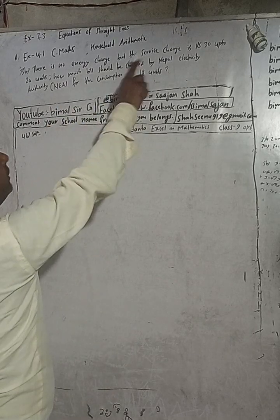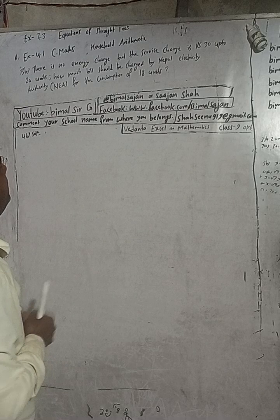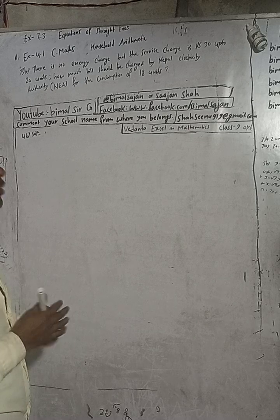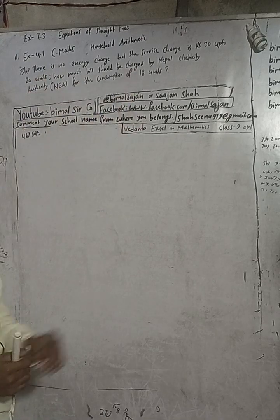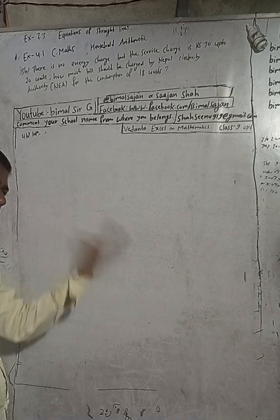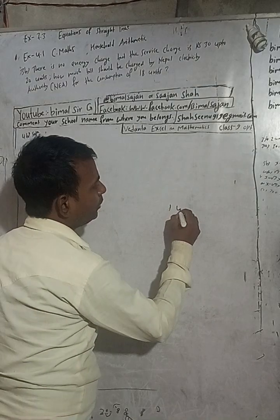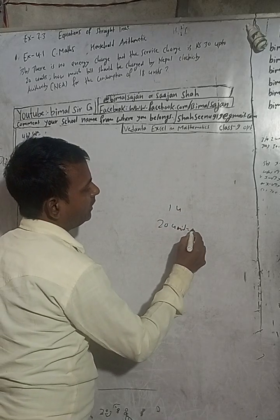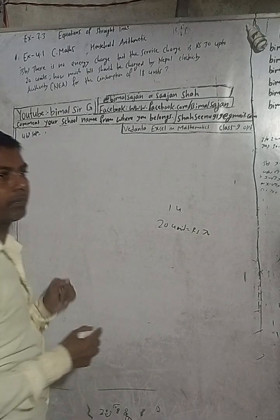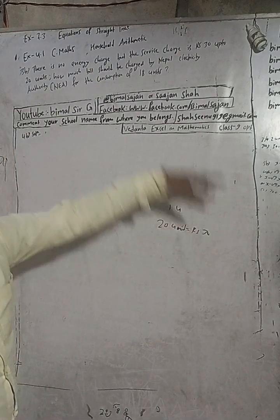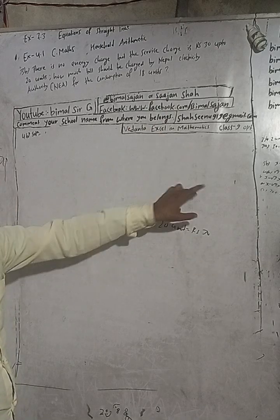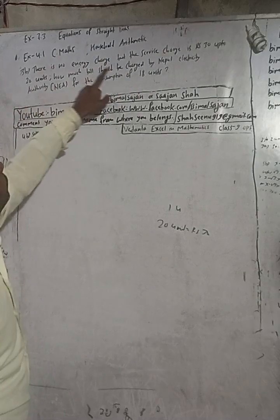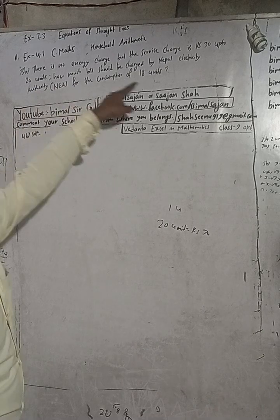There is no energy charge but the service charge is 30 rupees up to 20 units. For up to 20 units, the service charge is 30 rupees. How much bill should be charged by Nepal Electricity Authority for the consumption of 18 units?